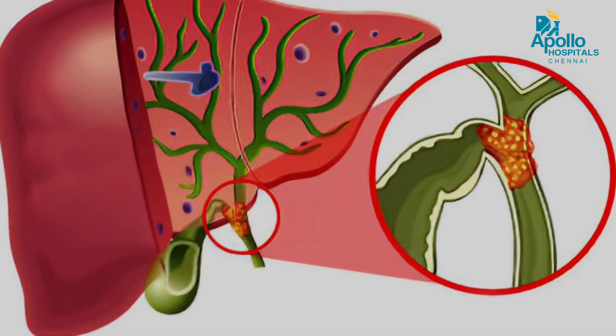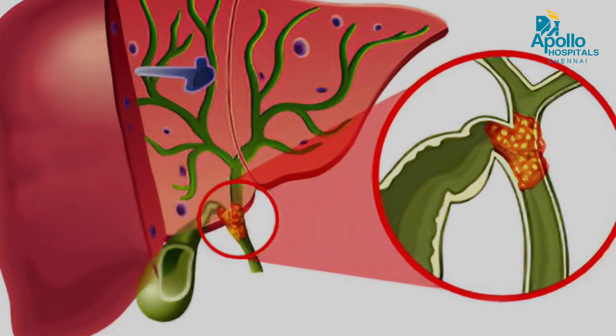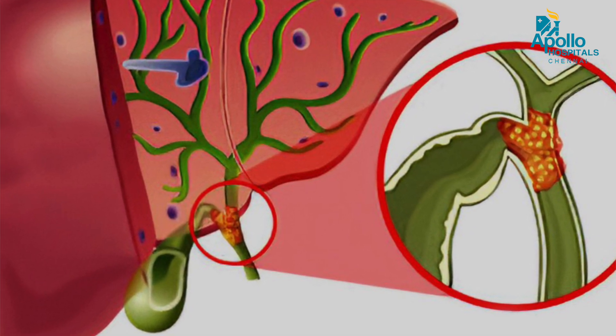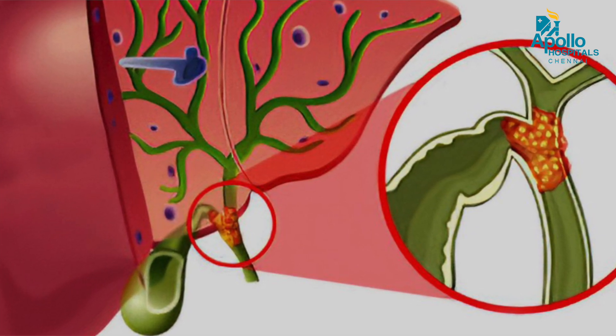Now, what are the symptoms of pancreatic cancer? The head of the pancreas, on the right side, is very closely associated with the bile duct, which is a tube that brings bile from the liver. When a tumor blocks this tube, the patient will develop jaundice — one of the most important symptoms. Along with jaundice, there is yellowish discoloration of the eyes, yellowish discoloration of urine, itching, and passing pale-colored stools.